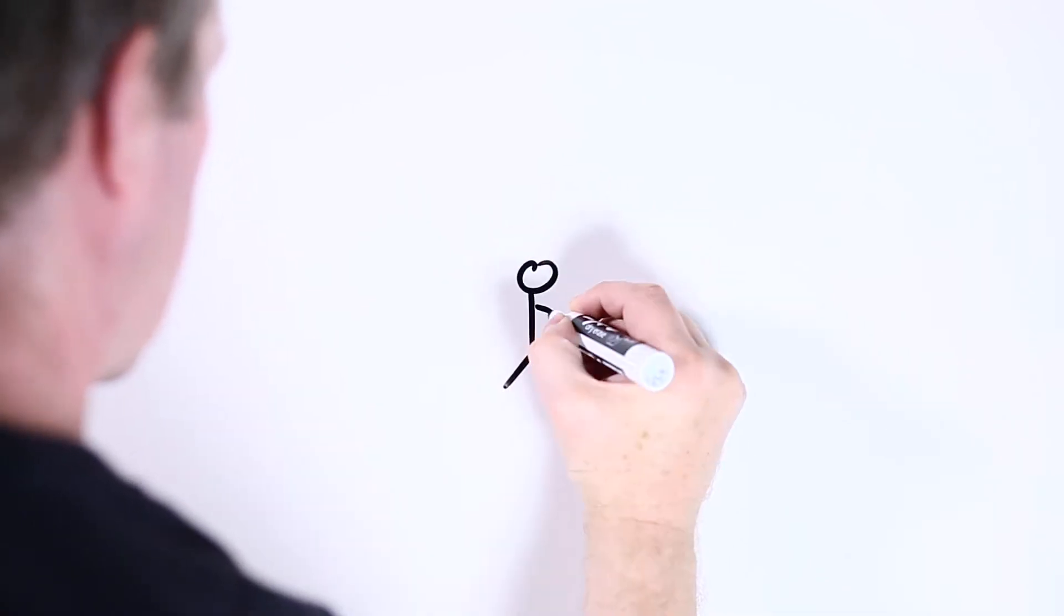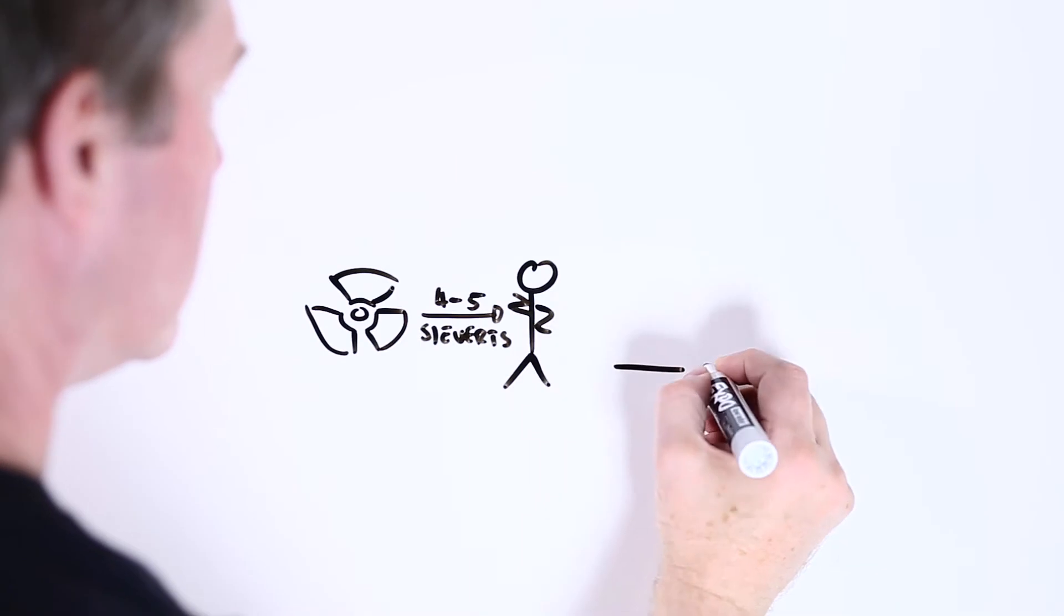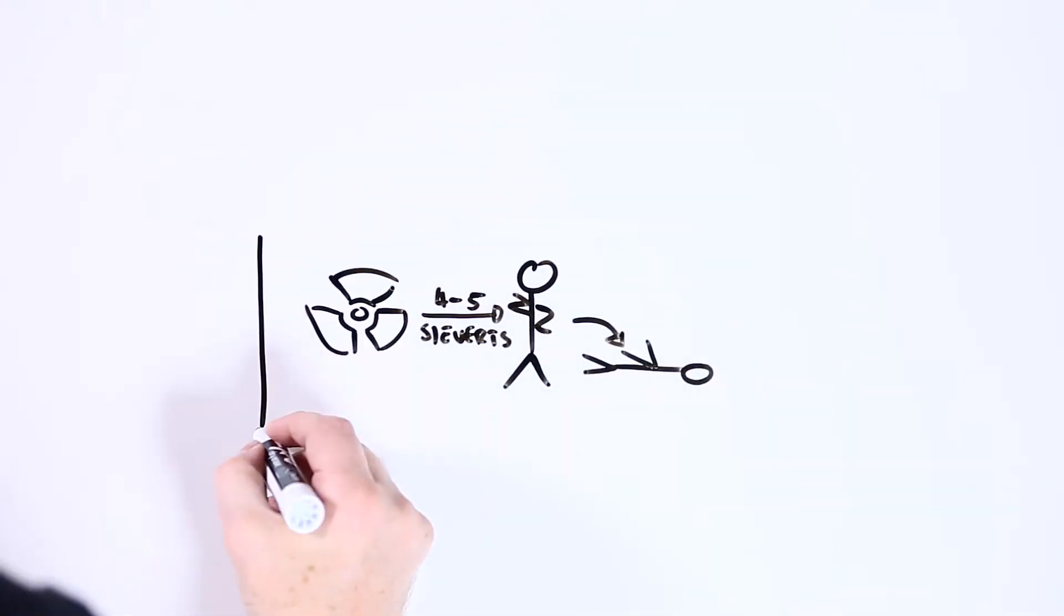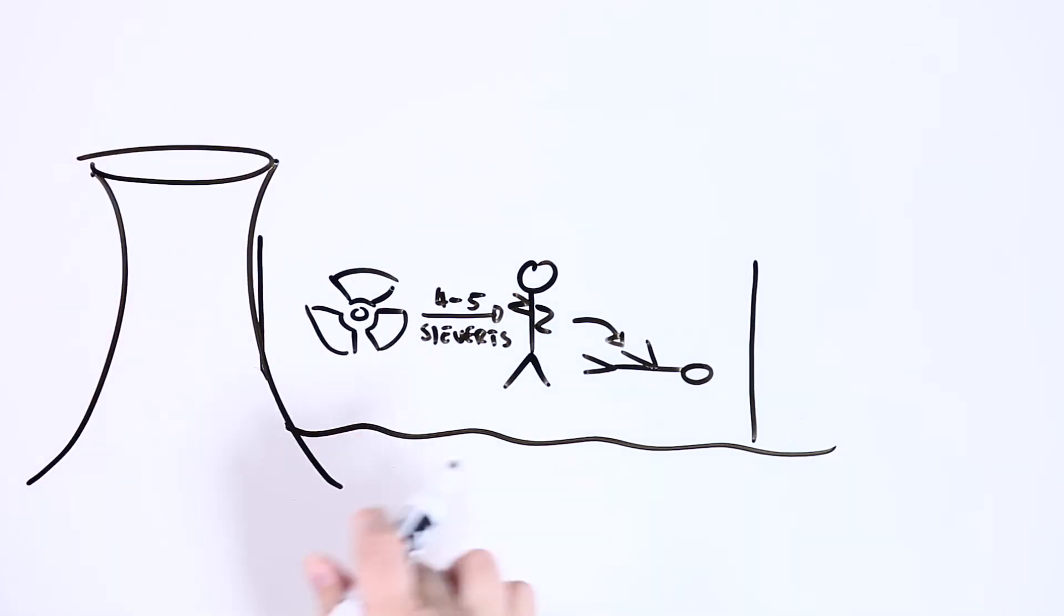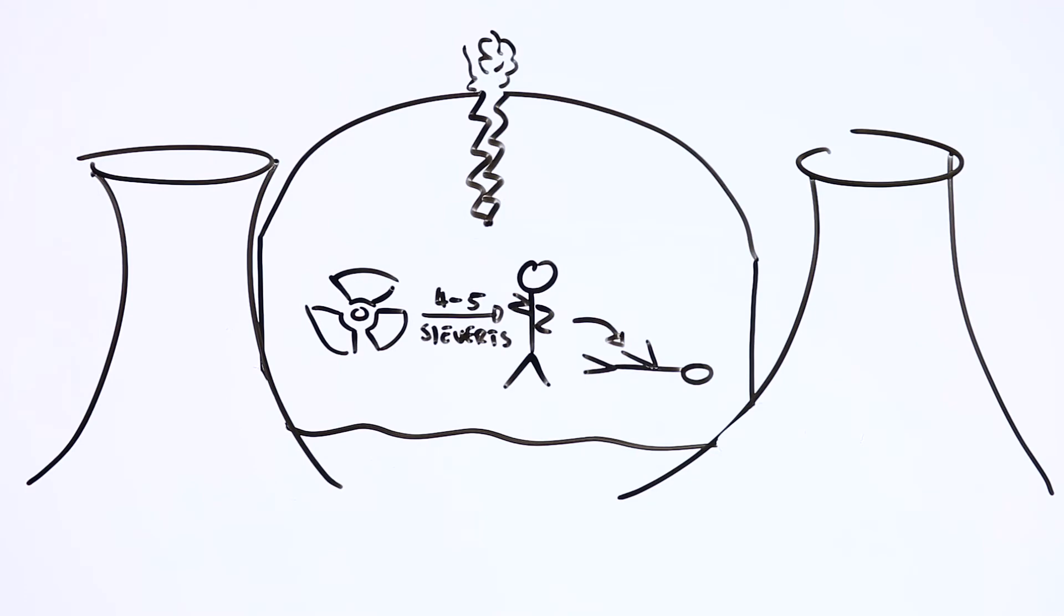For example, if you're exposed to four or five sieverts over a short period of time, it might well kill you. And one sievert, if delivered all at once, will make you pretty sick. But you need to be in some pretty extreme situations to get exposures like these, like being inside a nuclear reactor when there's a major leak.